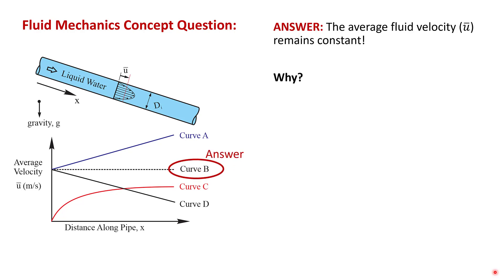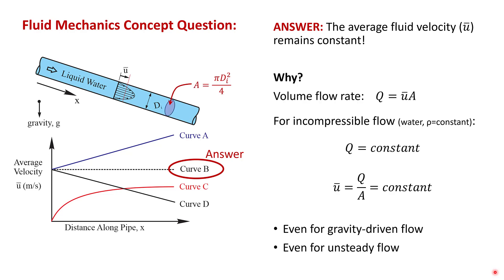The answer is curve B. The average velocity of the fluid remains the same along the entire length of the pipe. You can understand this by looking at the definition of volume flow rate.